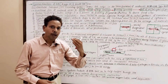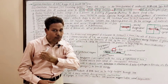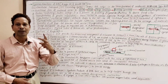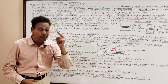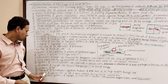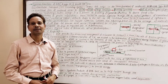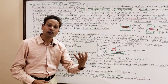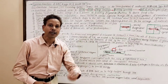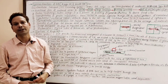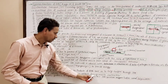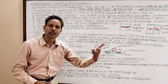Transport of Biomolecules: Smooth Endoplasmic Reticulum provides a passage for the transport of biomolecules from Rough Endoplasmic Reticulum to Golgi body. Storage of Calcium: in muscles, the Sarcoplasmic Reticulum stores calcium ions, and at the time of muscle contraction when calcium ions are needed, they are released by the Sarcoplasmic Reticulum.